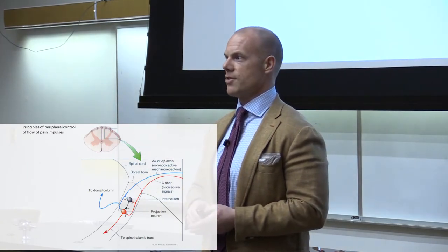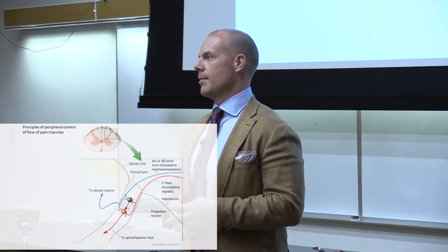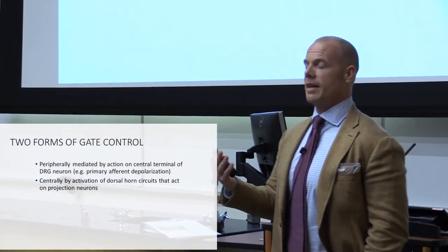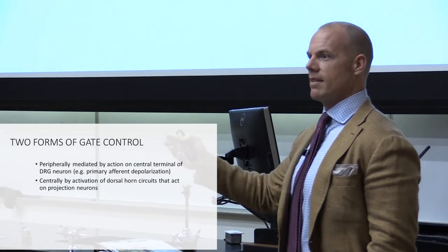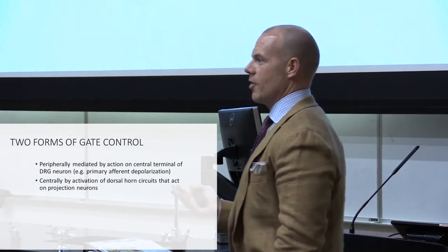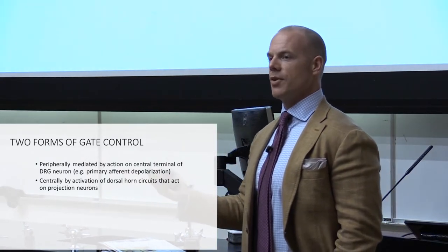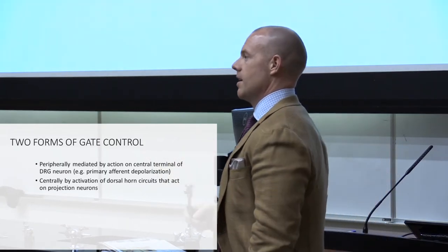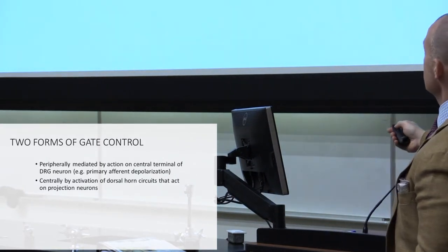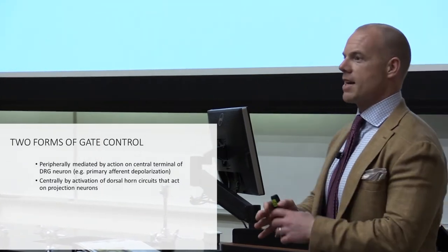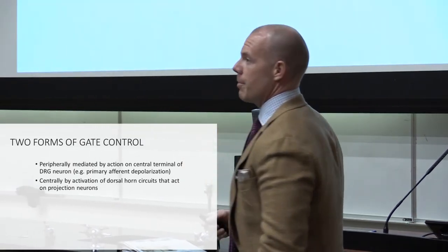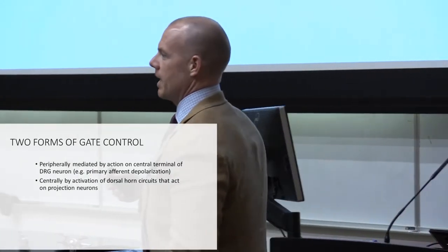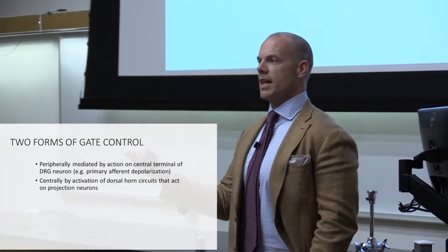The principle of allodynia — this mixing up of touch and pain pathways — really boils down to the way inhibition works in the spinal cord, and to this concept of disinhibition, or the loss of inhibition. So that's what we're going to talk about in the next two lectures. We're going to go over two competing ideas about how this works. One of them is that it happens through a peripherally mediated mechanism — it still involves the central nervous system, but it's all presynaptic. Basically what's happening is that C fibers get activated presynaptically by GABAergic interneurons in the dorsal horn.